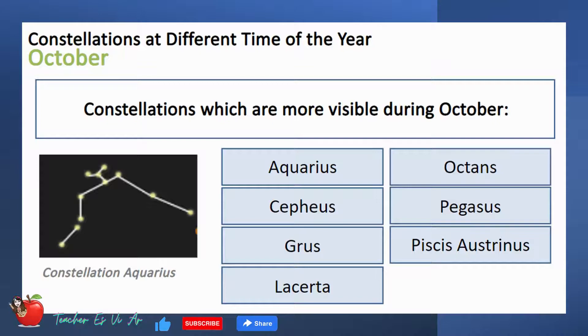These are the constellations more visible during October: Aquarius, Octans, Cepheus, Pegasus, Grus, Piscis Austrinus, and Lacerta.